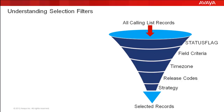To explain this, on my screen I have a funnel type diagram with different layers to it. Each layer here can be taken as a filter. You can view it like you pour the complete calling list through this funnel, and going through these layers of filters, the final output are the records selected on your selection. This picture is just a depiction — these filters don't necessarily work in the same order as shown on the screen.